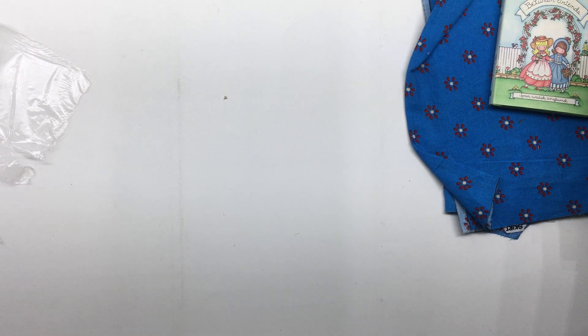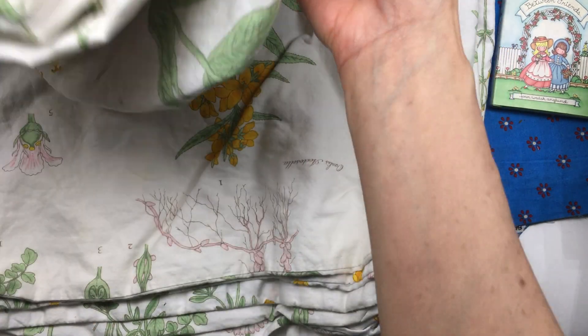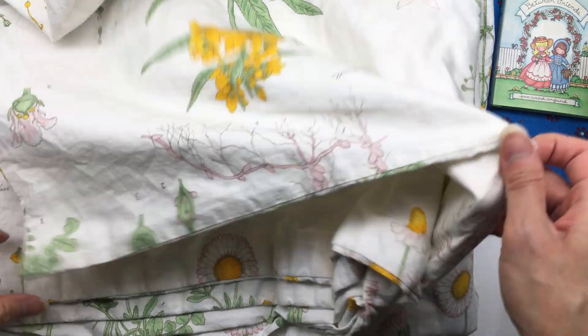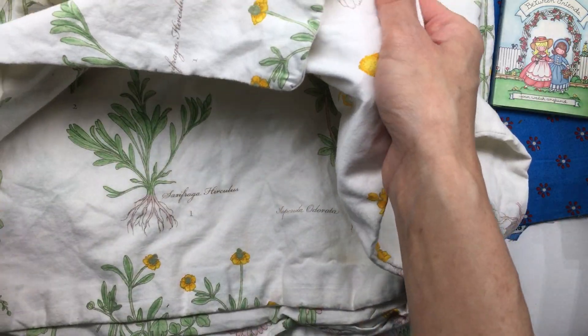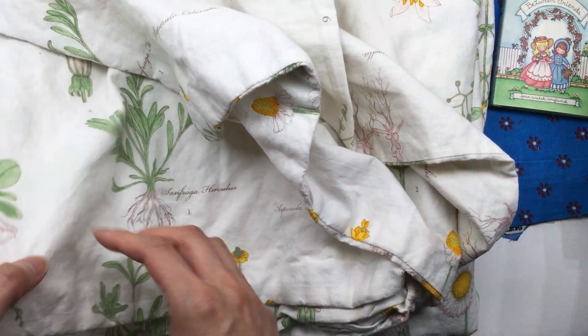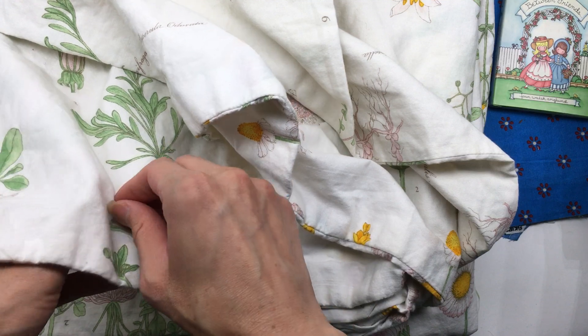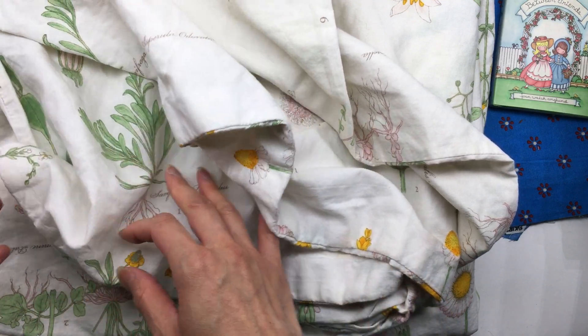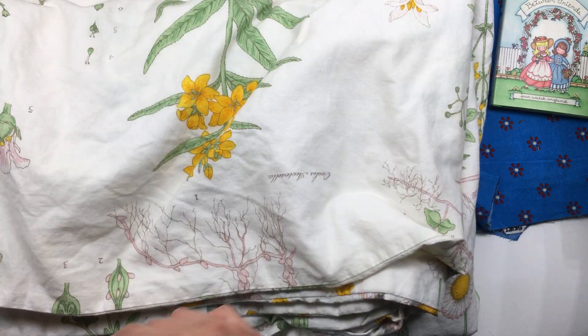And then I also found this really cool sheet. I don't believe it's vintage. I think this is a duvet cover because there's two layers here, it seems like there's two layers, and it's huge, so I think it's a duvet cover.